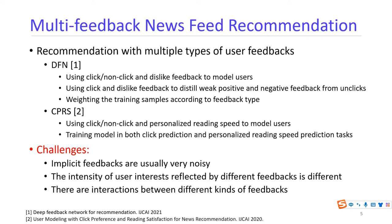However, these methods have the following challenges. First, implicit feedbacks are usually very noisy, so they cannot effectively distill real user positive feedback from click feedbacks. In addition, the intensity of user interest reflected by different feedbacks is usually different — share or dislike feedbacks are very strong while click and skip feedbacks are weak. There are also some inherent interactions between different kinds of feedbacks; for example, a user may first click and then finish reading an article.